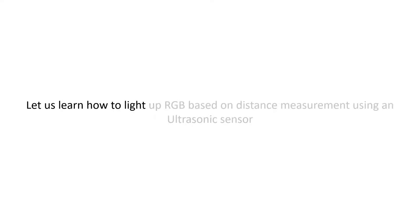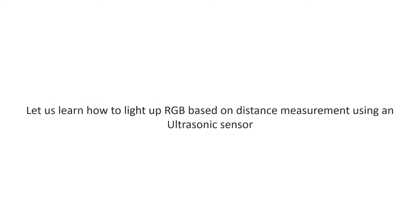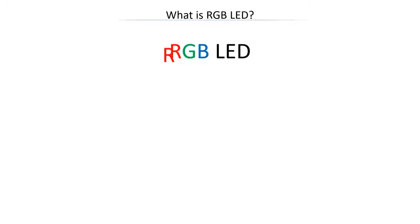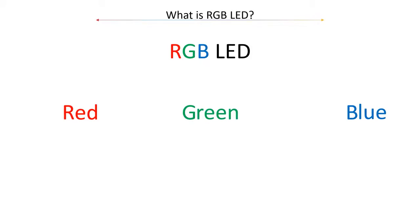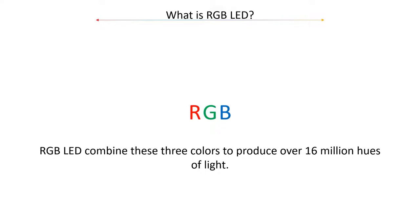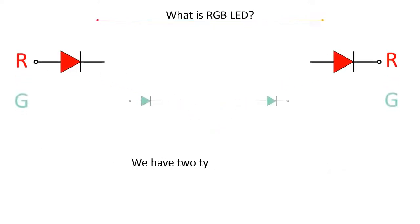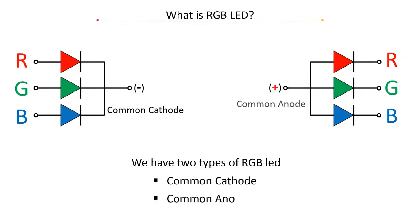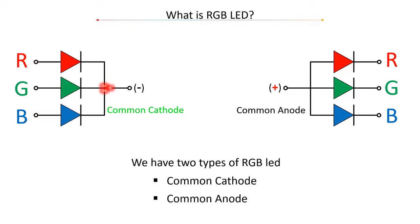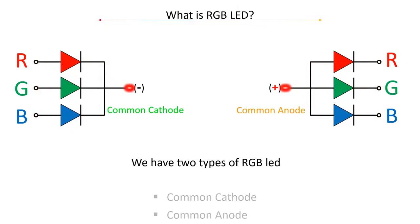Let us learn how to light up an RGB LED based on distance measurement using an ultrasonic sensor. RGB LED means red, blue and green LEDs combined to produce over 16 million hues of light. There are two types: common cathode and common anode. In common cathode RGB LED, colors are controlled by applying high power input to the RGB pins and connecting the internal cathode to the negative lead of the supply. In common anode configuration, colors are controlled by grounding the RGB pins and connecting the internal anode to the positive lead.